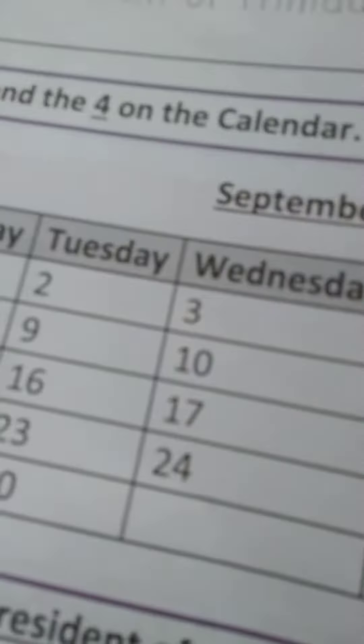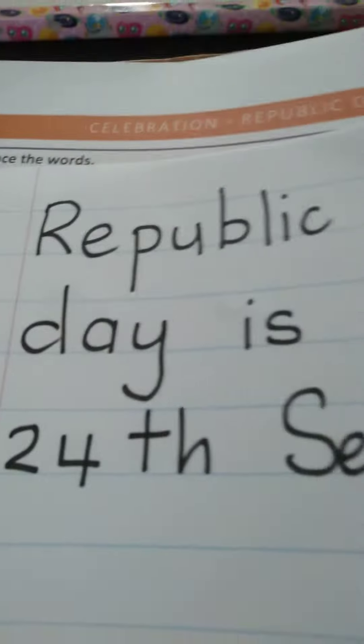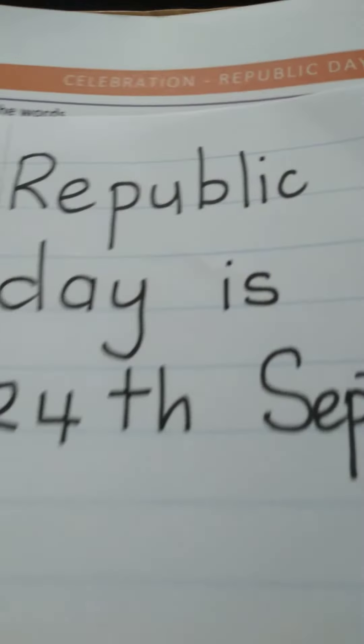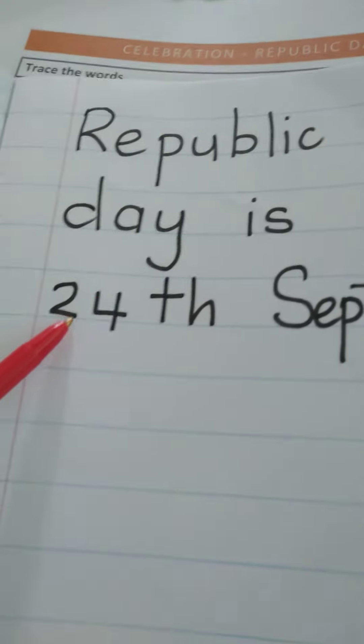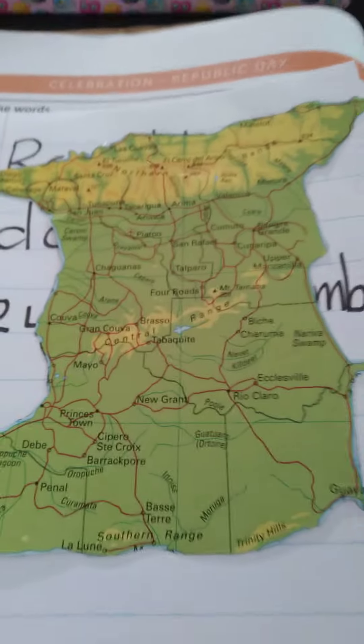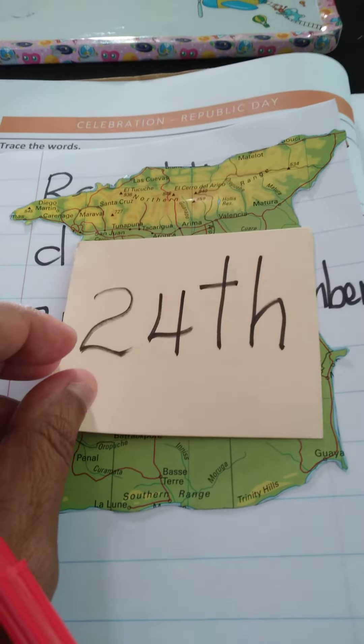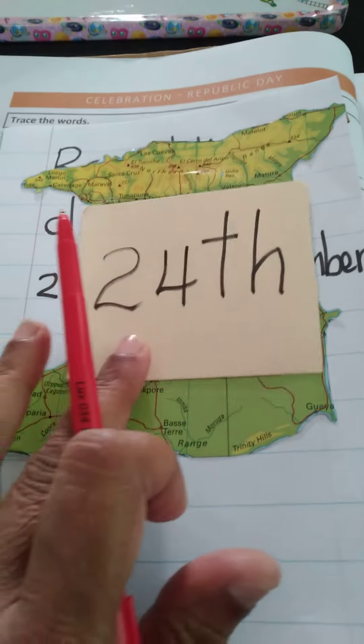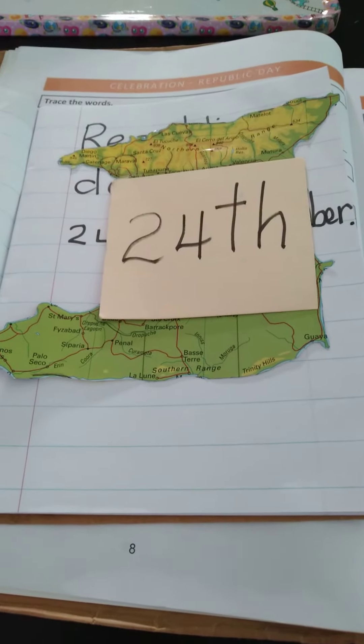So what I want you to do is get your drawing book and get mommy to write 'Republic Day is the 24th of September.' Then she will draw the Trinidad map. And since it's celebrated on the 24th, you will get a piece of paper, write the 24th — 2 and 4 — and stick it in the middle of the map.